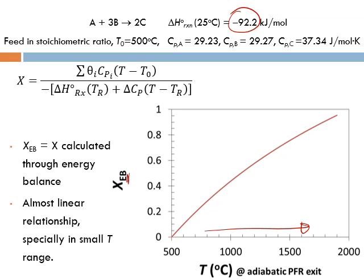Here we write XEB instead of X alone — this is the conversion calculated through the energy balance. We can see there is an almost linear relationship between XEB and T, especially over a small temperature range such as 500 to 800 or 1000 to 1500. The relationship is almost linear over these ranges.